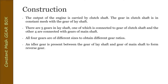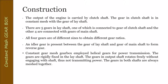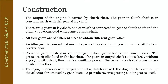An idler gear is present between the gear of the lay shaft and the gear of the main shaft to form the reverse gear. The constant mesh gearbox employs helical gears for power transmission. The gears are rigidly fixed on the lay shaft, while gears on the output shaft rotate freely without engaging the shaft unless the dog clutch is used to engage them. The selector fork, moved by the gear lever, pushes the dog clutch to shift gears.